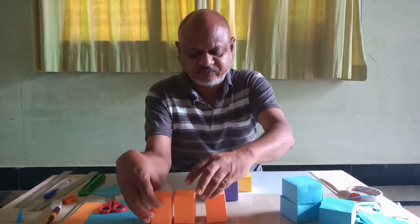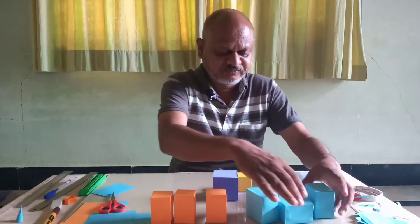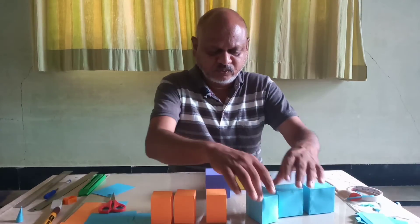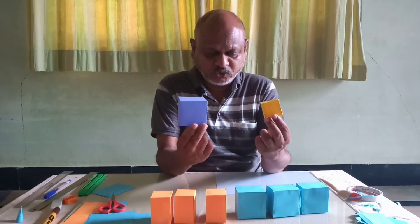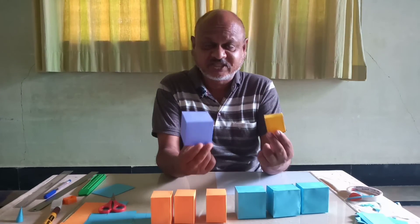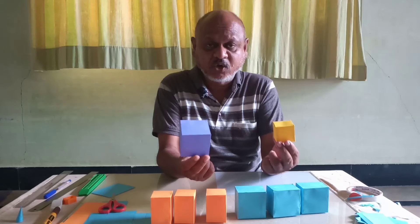So with these six cuboids and these two cubes, we will try to explain A plus B whole cubed.